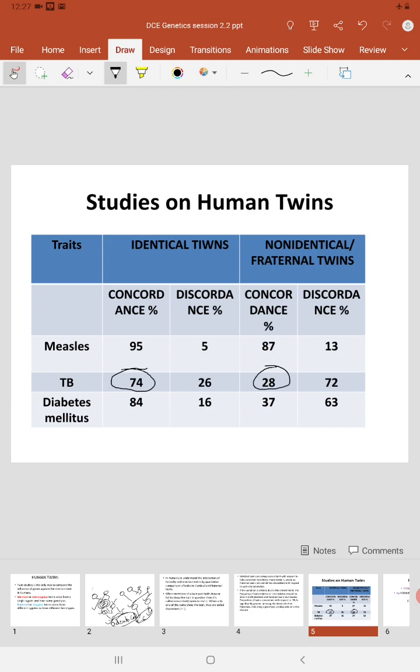You can compare this with measles. In measles, the frequency of concordance is high both in identical twins and in fraternal twins, indicating that it is not influenced by the genotype of the twins and probably it is the environment or the infectious agents which are solely responsible for the infection.